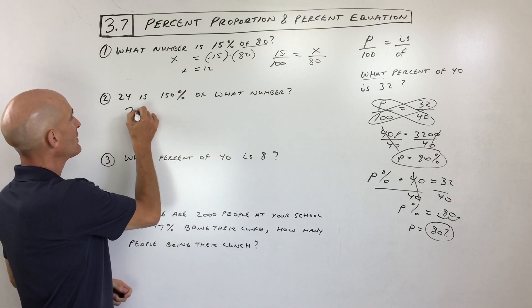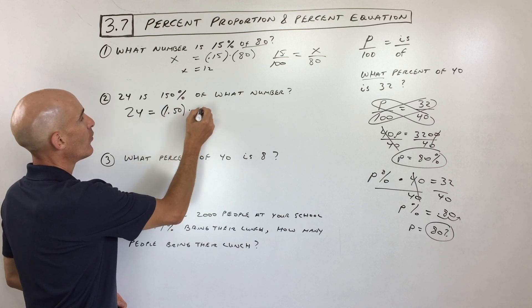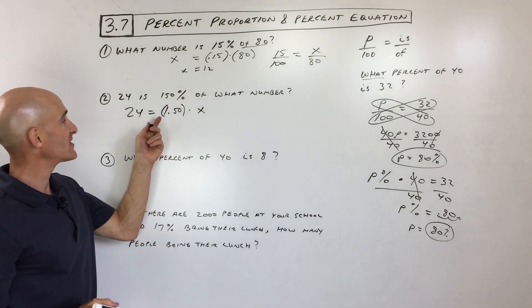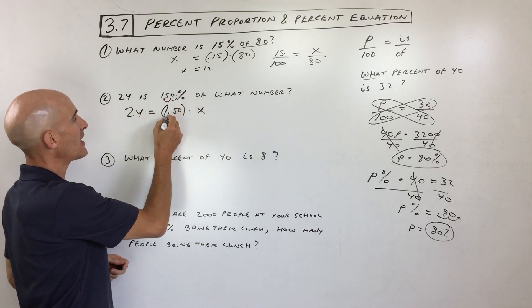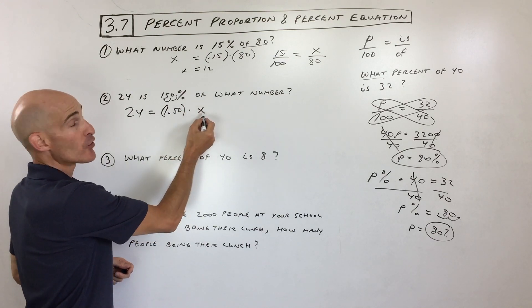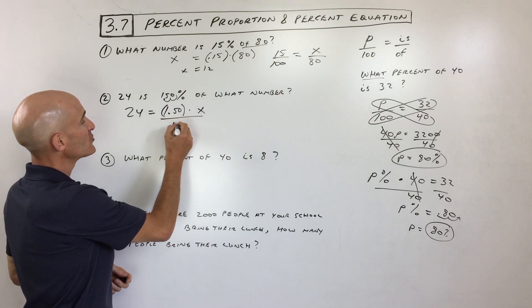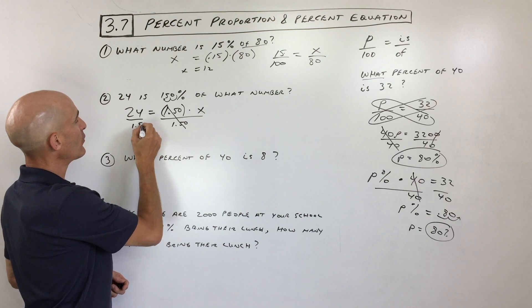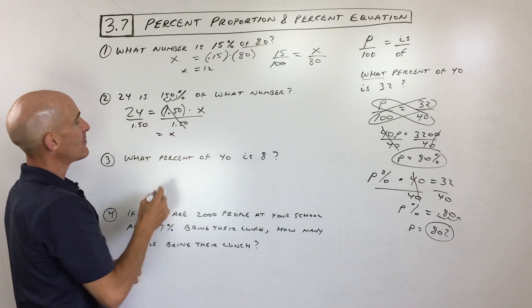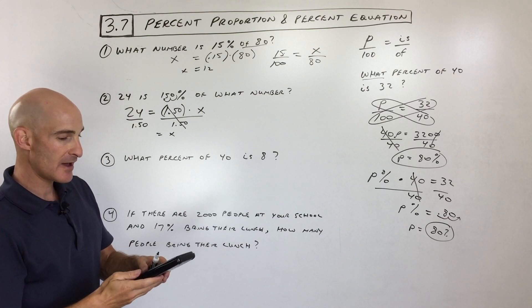24 is 150% of what number? So see how I like to translate it to an equation? 24 is means equal. 150%, I move that decimal two places to the left to convert it into a decimal, right? The percent to a decimal. Of means times. What means we don't know, so we make it a variable. That's our variable we're trying to solve for. Now all we have to do is do the opposite of multiplying both sides by 1.50, divide both sides by 1.50, and that should come out to, let's see, 24 divided by 1.5, 16.